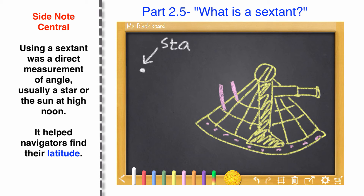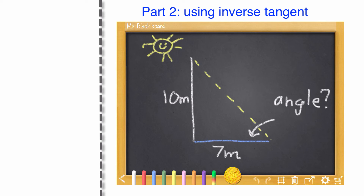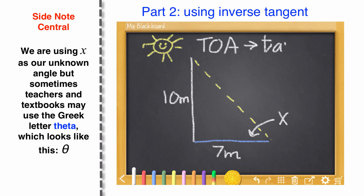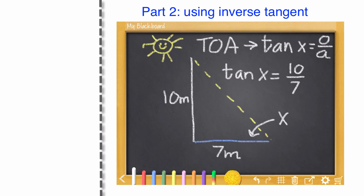A flagpole is 10 meters high and it's casting a shadow 7 meters long. What is the angle formed at the base where the tip of the shadow falls? If you're into astronomy or old-timey navigation with a sextant, this angle is called the altitude. The position of objects in the sky can be described by their altitude and azimuth. Here's our right triangle: 10 meter flagpole, 7 meter shadow. Using TOA — tangent equals opposite over adjacent — tangent X equals 10 over 7.